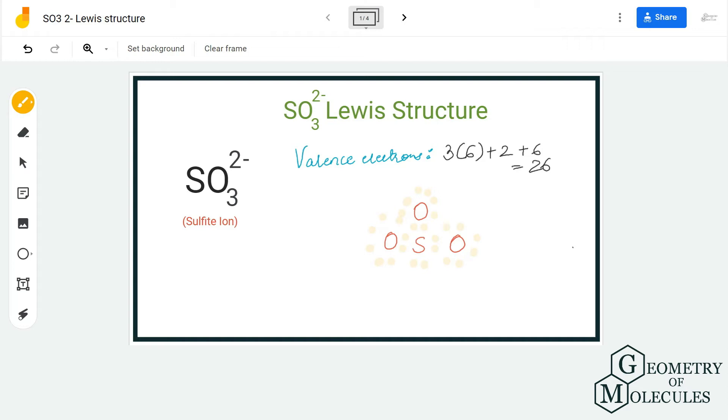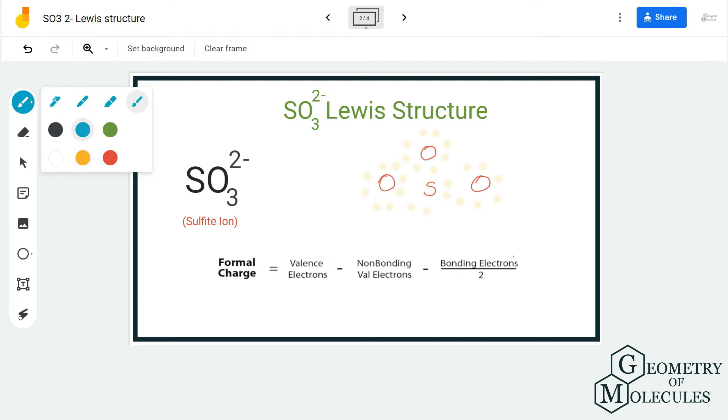You might think that as all atoms have complete octets, this is the Lewis structure for sulfite ion. But let's check the formal charges on sulfur and oxygen atoms, because sulfur can accommodate more than eight valence electrons in its outer shell.